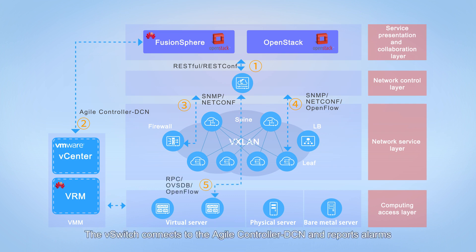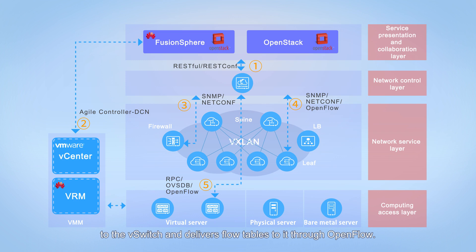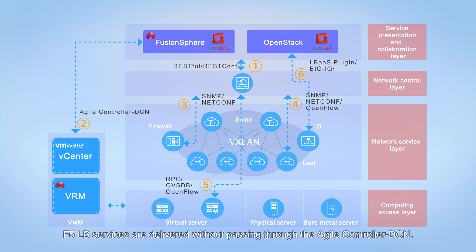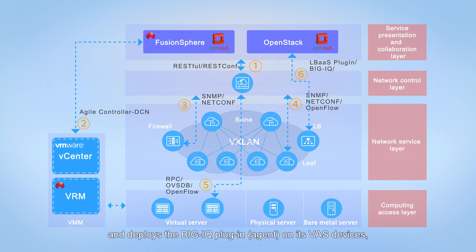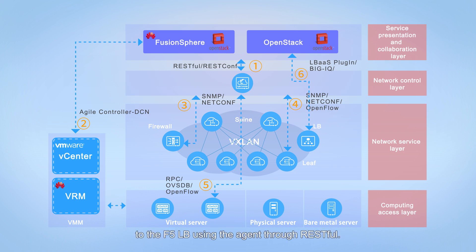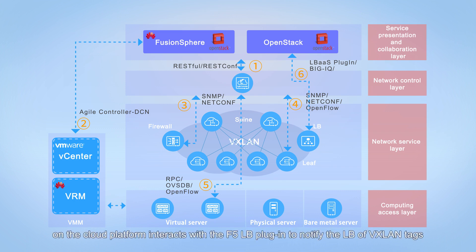The V-switch connects to the agile controller DCN and reports alarms to it through RPC. The agile controller DCN delivers OVSDB interaction information to the V-switch and delivers flow tables to it through OpenFlow. In the cloud network integration scenario, F5LB services are delivered without passing through the agile controller DCN. An F5LB LBaaS plugin is deployed on the cloud platform along with a BigIQ plugin on its VAS devices so that the cloud platform can manage F5 VAS devices. The cloud platform uses a plugin to deliver services to the F5LB using the agent through RESTful, and the agile controller DCN plugin interacts with the F5LB plugin to notify it of VXLAN tags to be carried so that packets are transmitted to the fabric network.